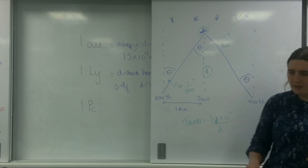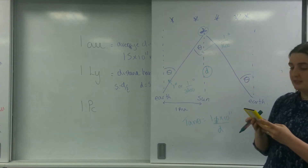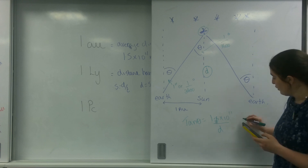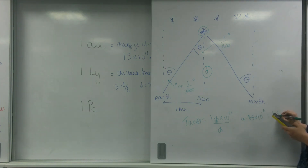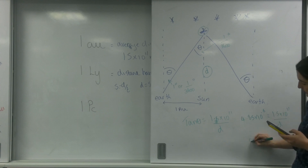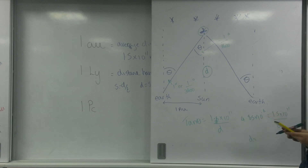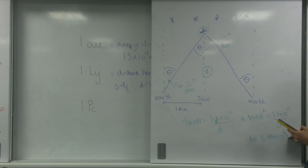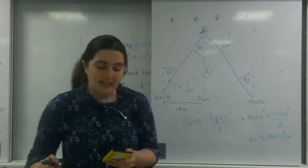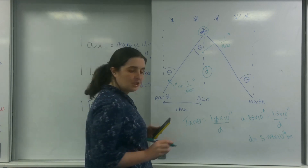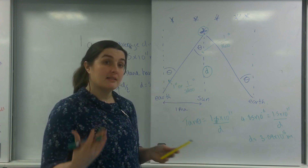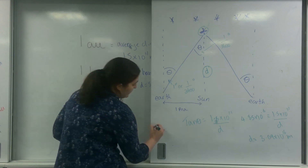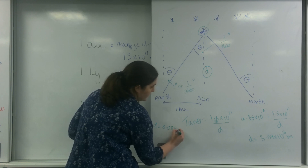I have the opposite and I want the adjacent, so I'm using tan θ = opposite over adjacent: 1 AU, so 1.5 times 10 to the 11, over this distance - the parsec. Plugging in 1 divided by 3,600 and taking tan of that gives 4.85 times 10 to the minus 6. So the parsec distance equals 1.5 times 10 to the 11 divided by that, giving 3.09 times 10 to the 16 metres. On your data sheet they have 3.08 - that could be due to rounding, or it may have been worked out in radians instead of degrees.